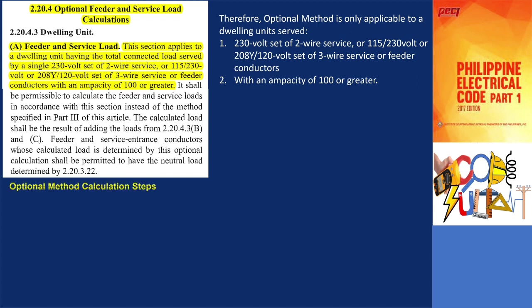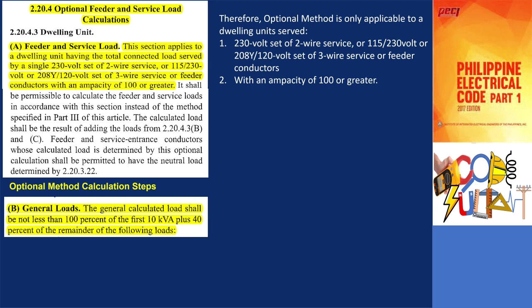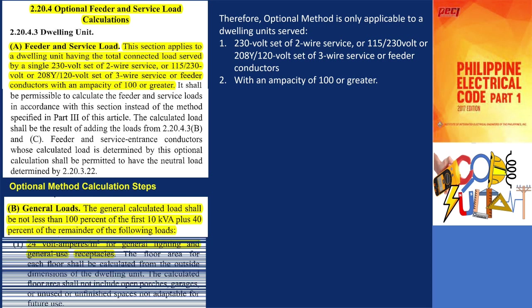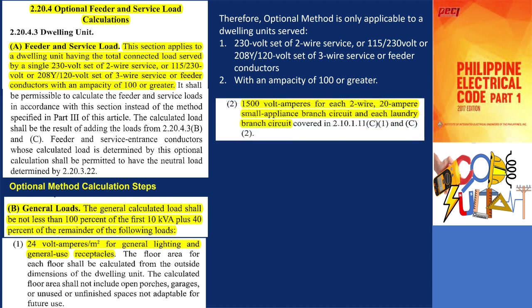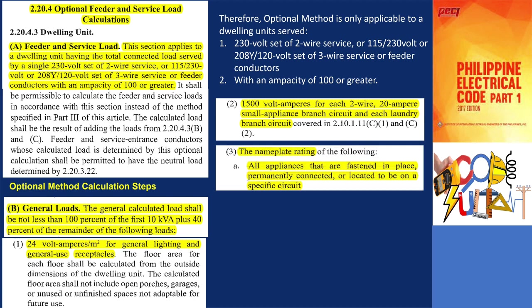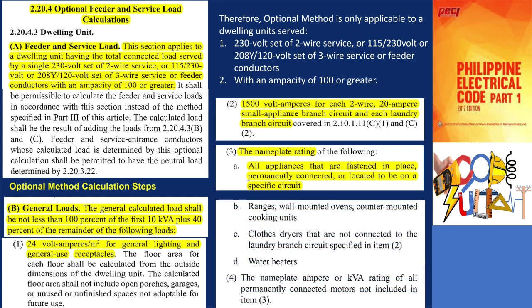The optional method consists of three calculation steps. The first step is to determine the general load. The general load must be at least 100% for the first 10 kVA, plus 40% of the remainder of the following loads: (1) general lighting and receptacles at 24 volt amperes per square meter; (2) small appliance and laundry branch circuits at 1,500 volt amperes for each 20-ampere branch circuit; and (3) the nameplate volt ampere rating of all appliances and motors fastened in place, except heating or air conditioning units.